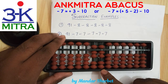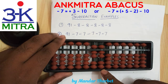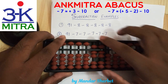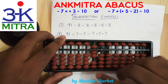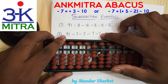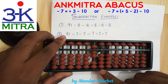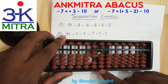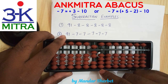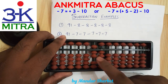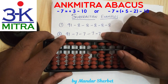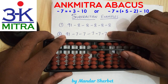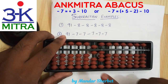Moving to the next subtraction of 7 — do we have 7 beads available on this rod? Yes, we do. So this third 7 can be subtracted directly. Moving to the fourth subtraction of 7 — do we have 7 beads? No, we don't have anything on this rod. So we use the big friend formula: plus 3 minus 10. Plus 3 is done, minus 10 on the next left rod, and the subtraction of 7 is done.